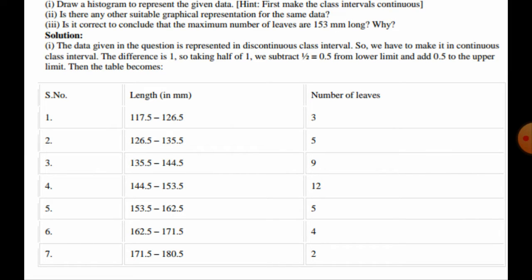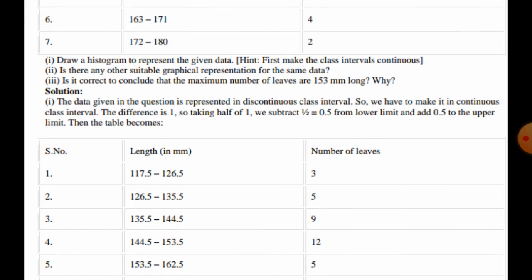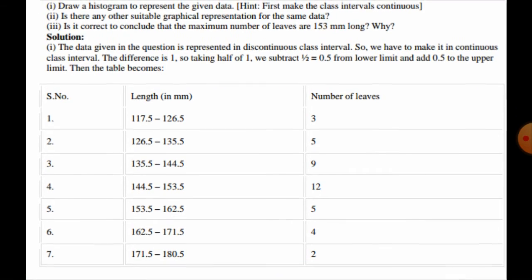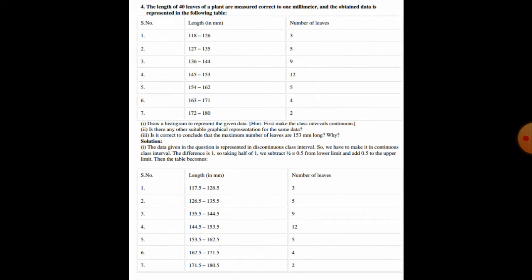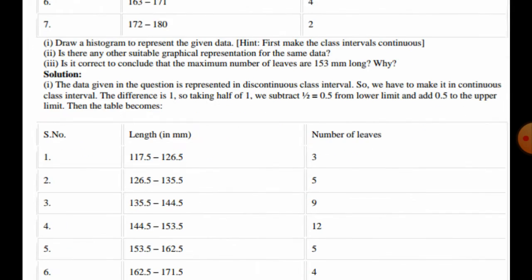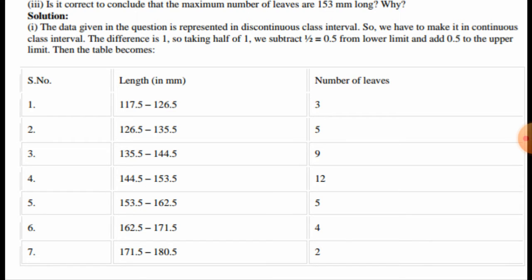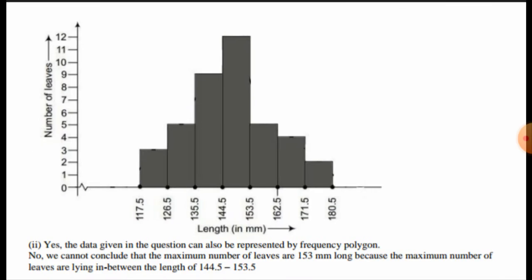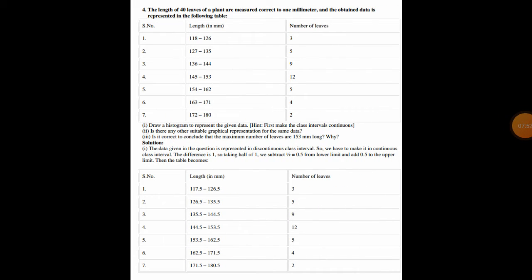For the histogram, on the x-axis we take the lengths from 117.5 up to 180.5, and on the y-axis we take the number of leaves: 3, 5, 9, 12, 5, 4, 2 — with a scale from 0 to 12. In this way we can draw the histogram.